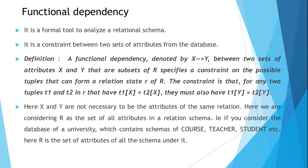R is a universal relational schema. The functional dependency specifies a constraint on the possible tuples that can form a relational state of R. The constraint is: for any two tuples t1 and t2 that have t1[X] equal to t2[X], they must also have t1[Y] equal to t2[Y]. That is, if the value of X is the same for two tuples, the value of Y must also be the same.